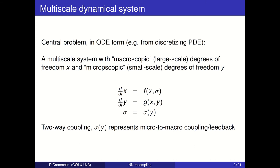The background of what I'm about to present is the following problem in multiscale modeling and simulation of dynamical systems. Consider this coupled system of large-scale degrees of freedom, denoted x, and small-scale microscopic degrees of freedom, denoted y. They're coupled via a set of coupled ordinary differential equations, which can come, for instance, from discretizing a partial differential equation.